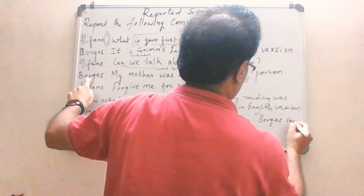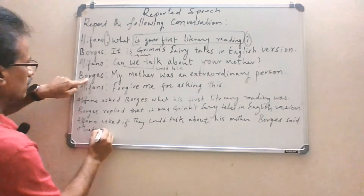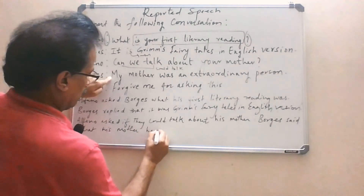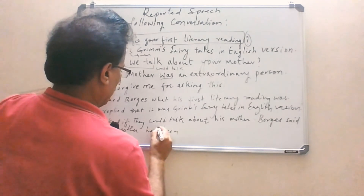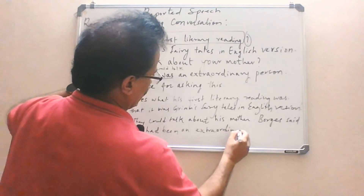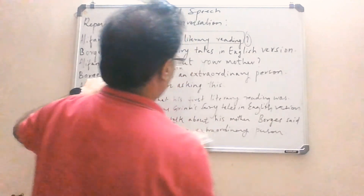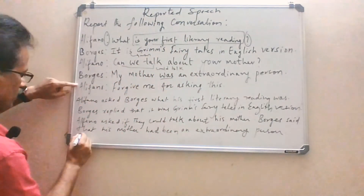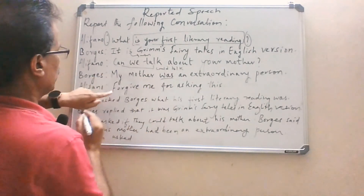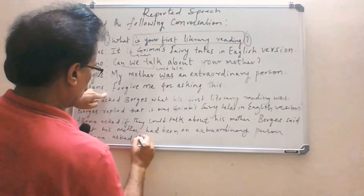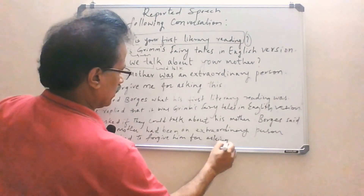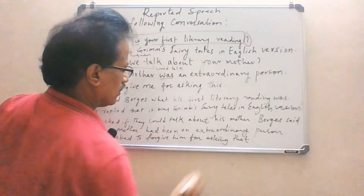Bogus said that his mother had been — 'was' is changed to 'had been' — an extraordinary person. Then, Alifana said 'Forgive me for asking this' — it is an imperative sentence. So the reporting verb 'asked' is used, and 'to' joins both parts: Alifana asked to forgive him for asking that.